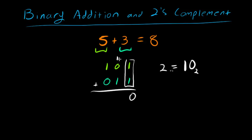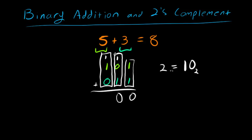Moving to the second column, we now have 1 plus 0 plus 1, which again equals 2, or 1 0 in binary. So we bring the 0 down and carry the 1 to the next column. In the third column we have 1 plus 1 plus 0, which is 2 again — bring the 0 down and carry the 1. That extra 1 in the fourth column has nothing to add to, so it stays. And 1 0 0 0 in binary equals 8 in base 10 — we got the right answer.